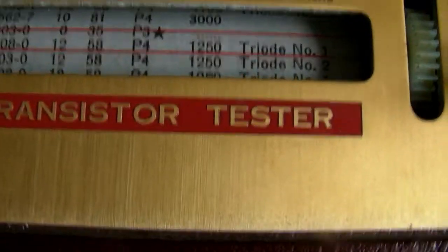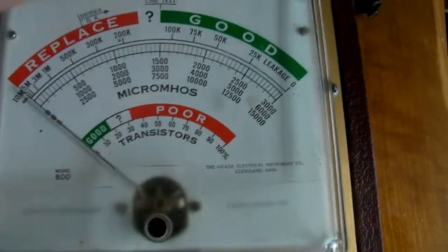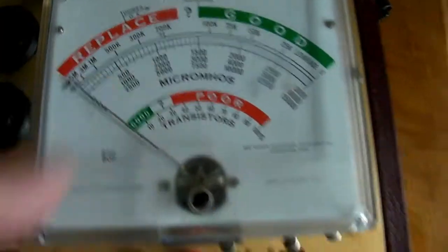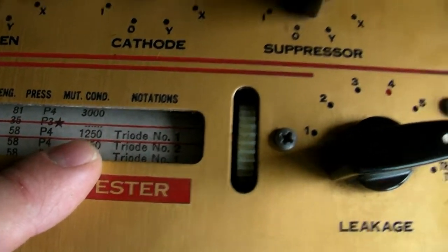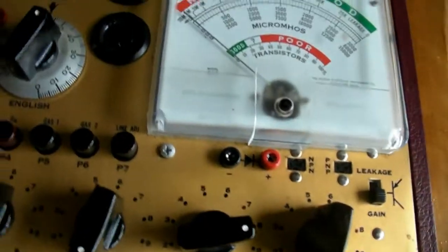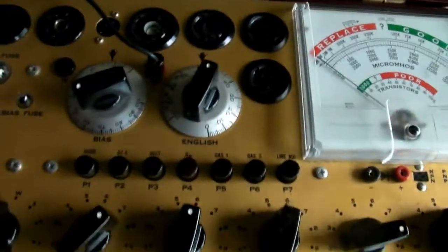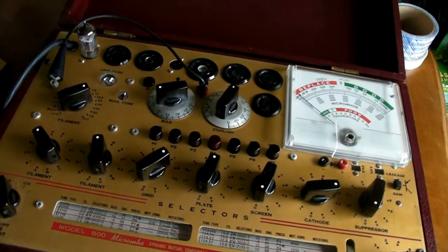So I'm going to go back to tube test. And when we're on tube test, we're going to be looking at this scale where it says micromhos. You don't look at that good and bad scale, you just look at these numbers. So we're looking for a mutual conductance of 1250. If this was a fairly new tube, we would test it around 1250. This tube is probably, I'm going to say, at least 10 years old or more.